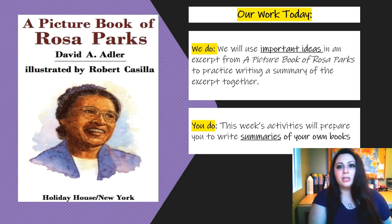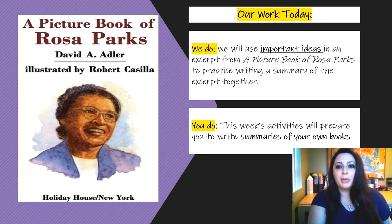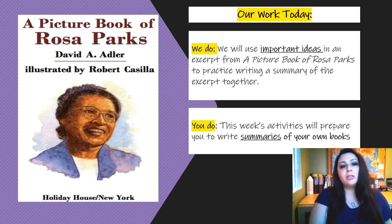So here's kind of our agenda or our specific task for today. Together we will use important ideas, we have to determine them, in an excerpt, which is just like a piece of a story from a picture book of Rosa Parks to practice writing a summary of that excerpt together. So we're not going to summarize the entire book right now and we're not going to do the important ideas from the entire book right now. We're just going to take a few pieces and in this section what's the important idea, in this section what's the important idea. We're doing this book is a book that you didn't choose, it's a book that we're doing together, and you also have your own book you're reading, like your IDR book.